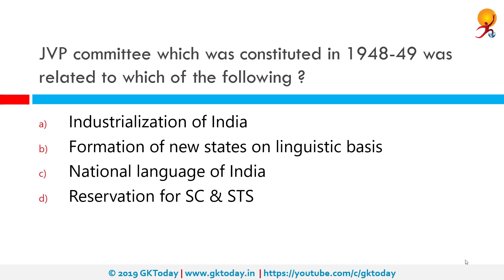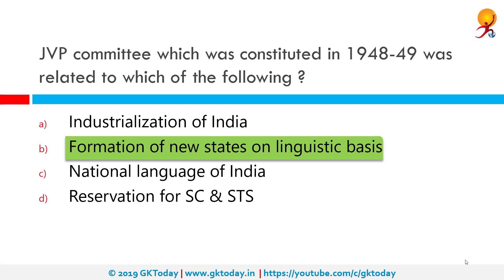The JVP Committee, constituted in 1948–49, was related to which of the following? The correct answer is the formation of new states on a linguistic basis. However, this committee actually recommended the reorganization of states on the basis of security, unity, and economic prosperity of the nation instead of on a linguistic basis.